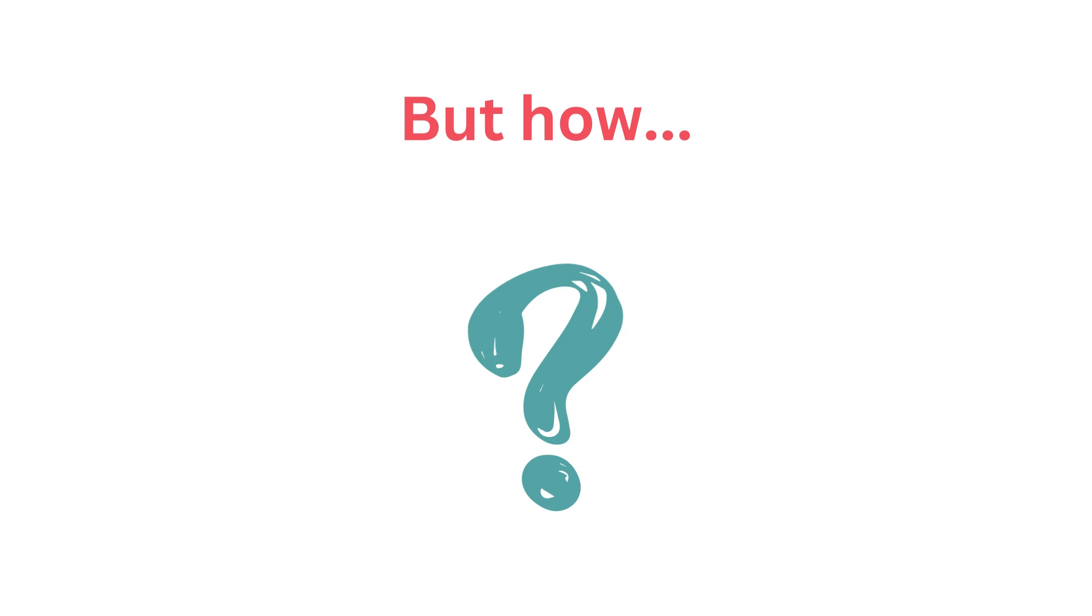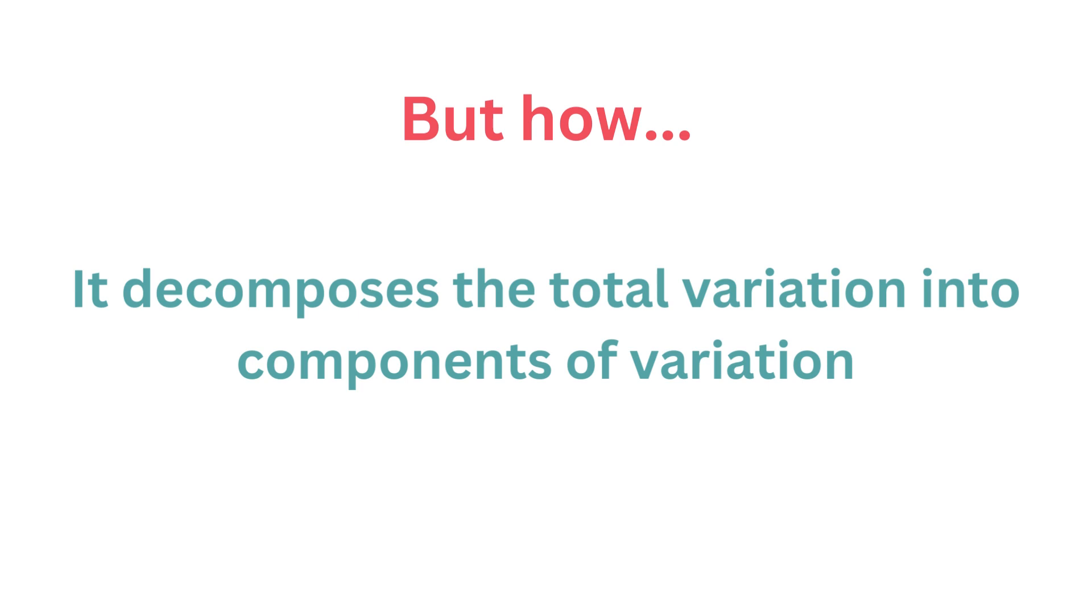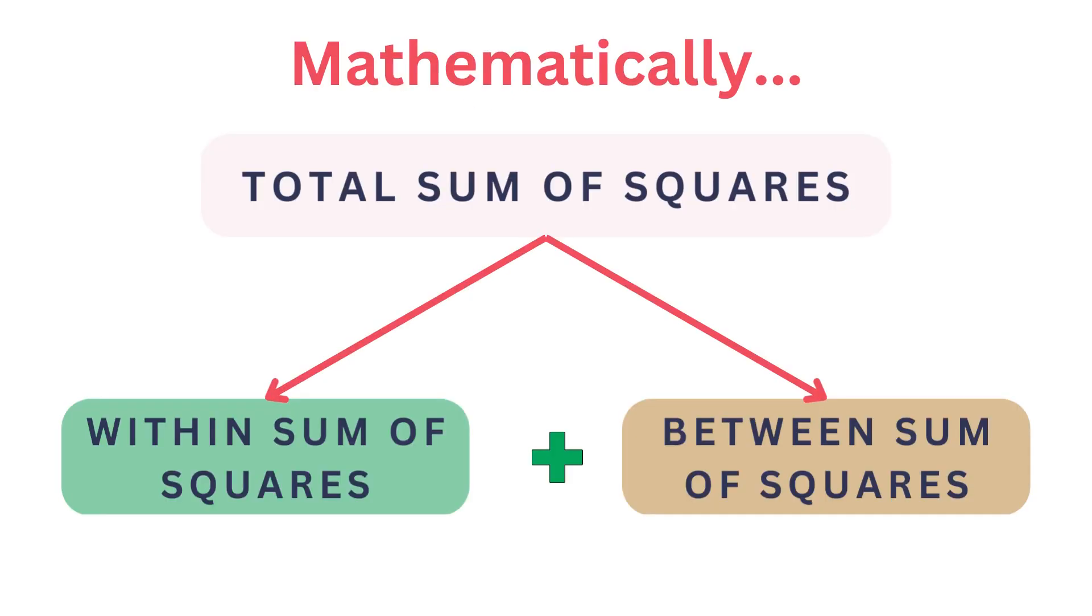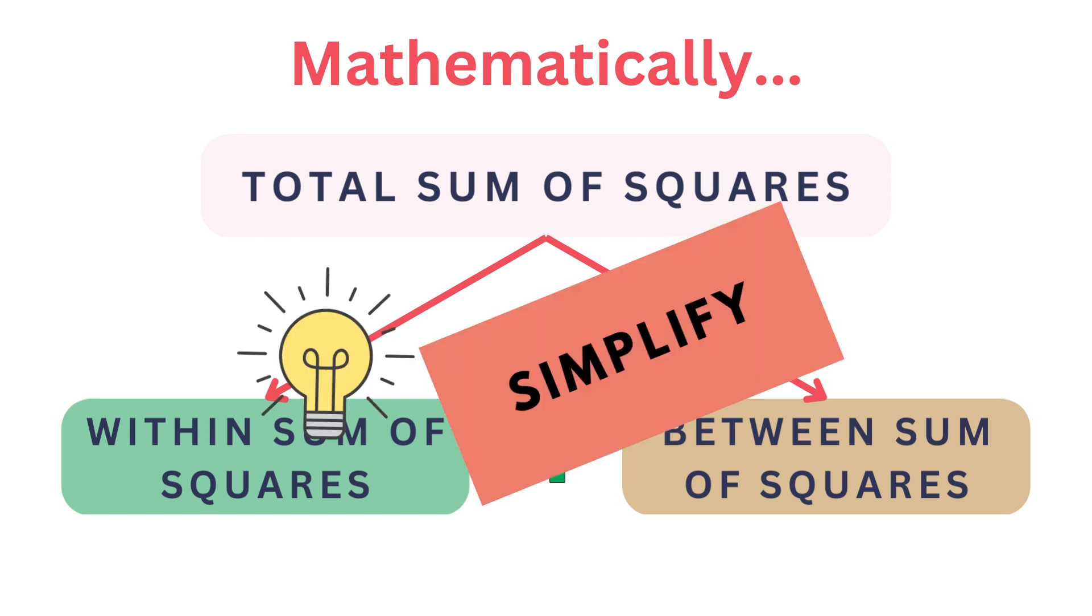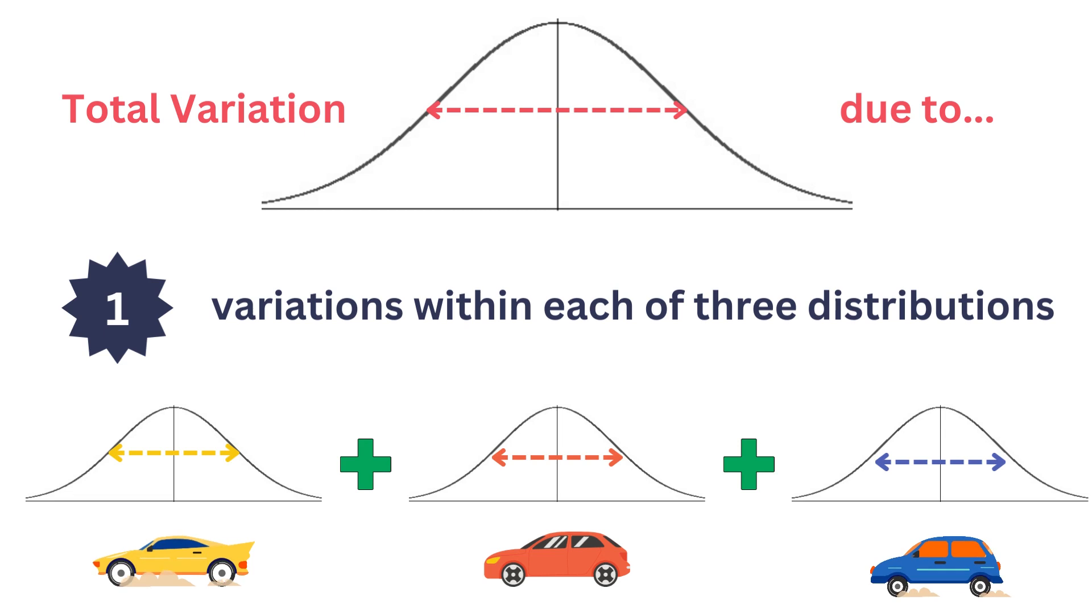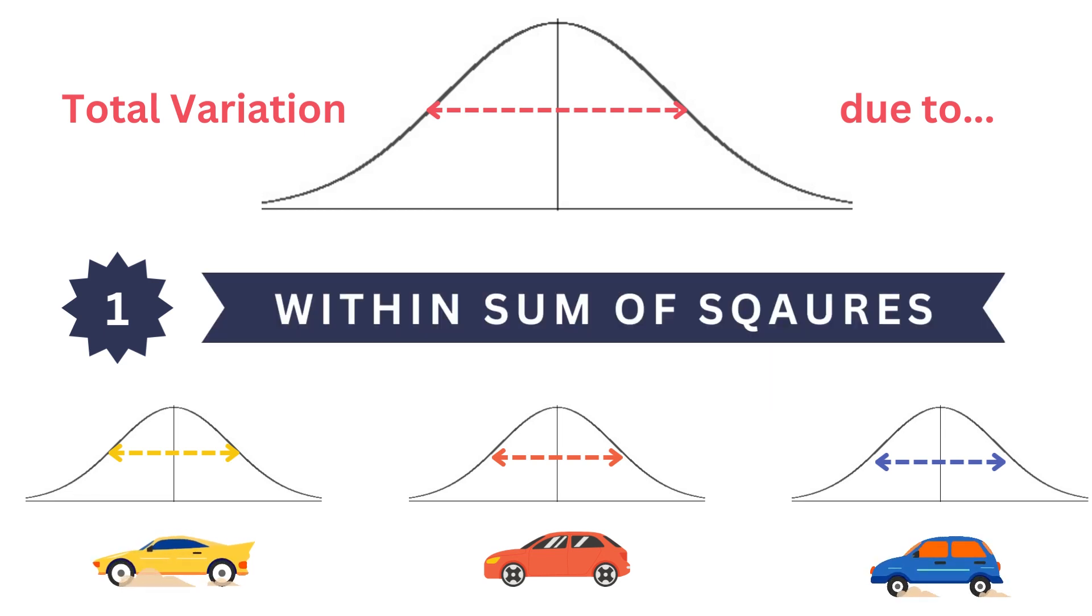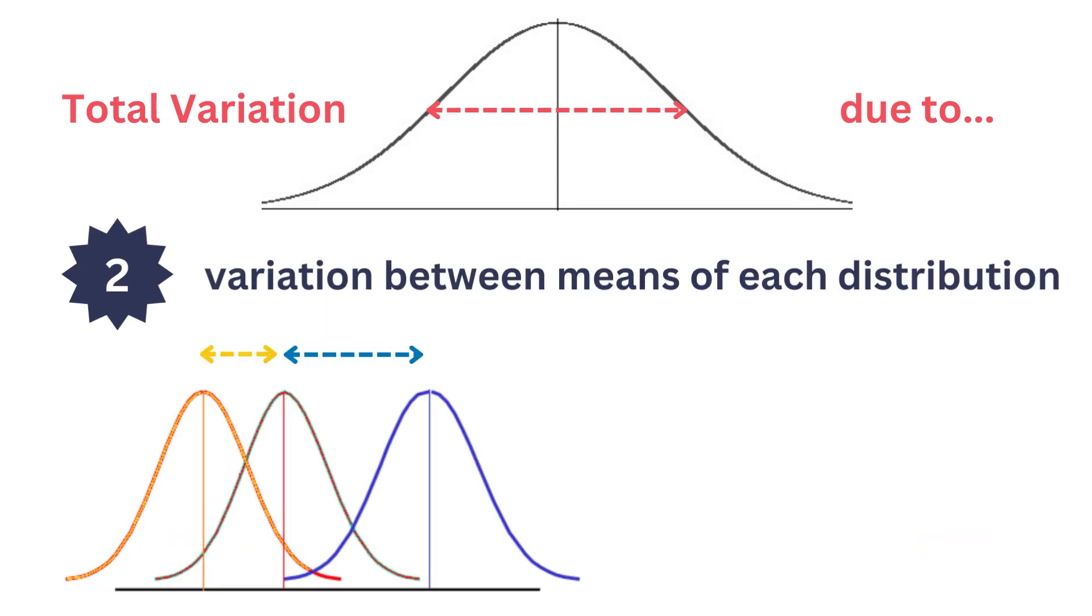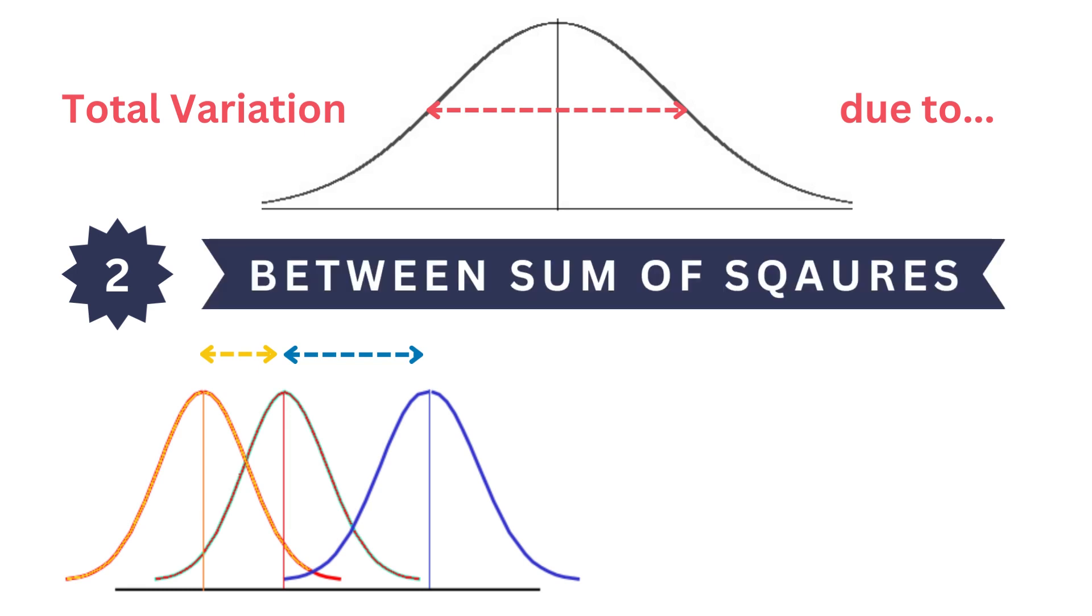But wait, how do we do that? Let's understand. ANOVA decomposes total variation into components of variation. Mathematically, total sum of squares equals within sum of squares plus between sum of squares. Let me simplify this for you. Total variation in our data can be due to variations within each of these three distributions, and that is within sum of squares. Total variation in our data can also be due to variation between means of each distribution, and that is between sum of squares.